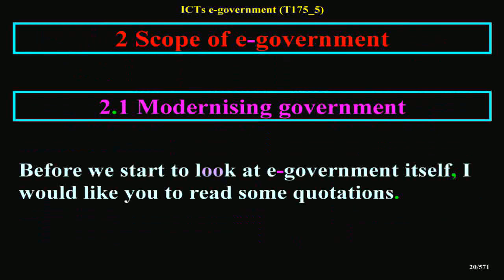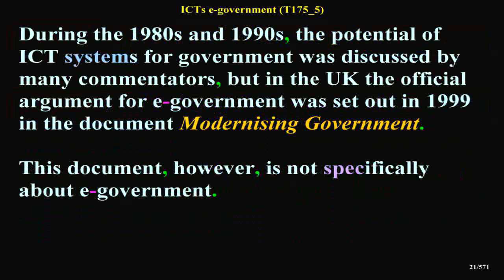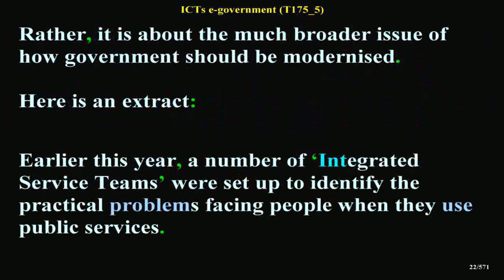Modernizing Government. Before we start to look at E-Government itself, I would like you to read some quotations. During the 1980s and 1990s, the potential of ICT systems for government was discussed by many commentators, but in the UK the official argument for E-Government was set out in 1999 in the document 'Modernizing Government'. This document, however, is not specifically about E-Government. Rather, it is about the much broader issue of how government should be modernized.